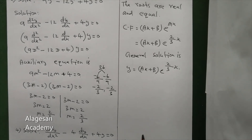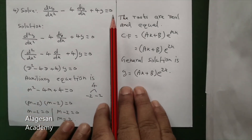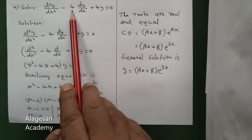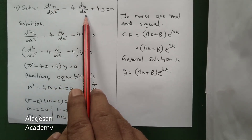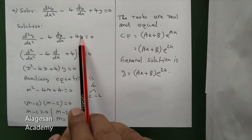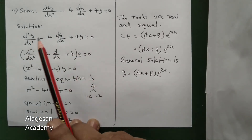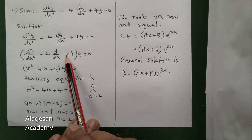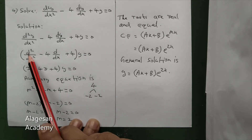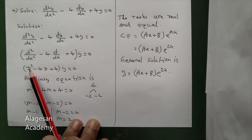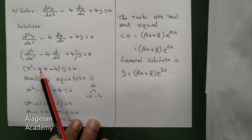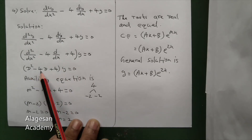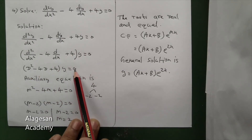This is the general solution. Can you understand this problem? See question number 4. Solve: d squared y by dx squared minus 4 dy by dx plus 4y equal to 0. As usual, take y out. So: d squared by dx squared minus 4 d by dx plus 4, into y equal to 0. Replace with capital D: D squared minus 4D plus 4, into y equal to 0.